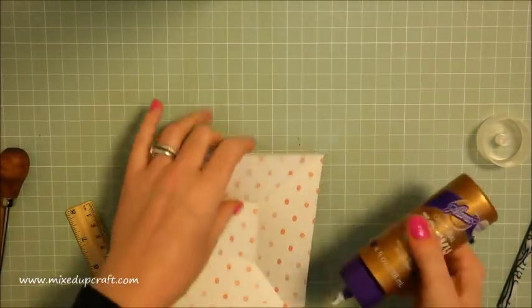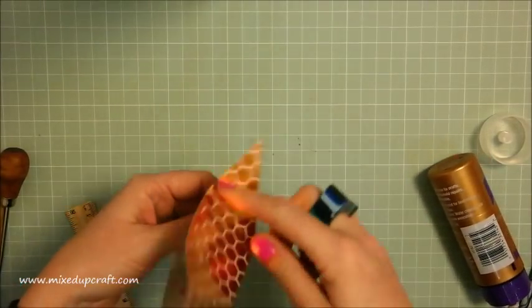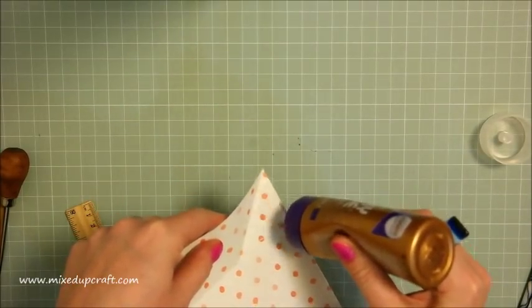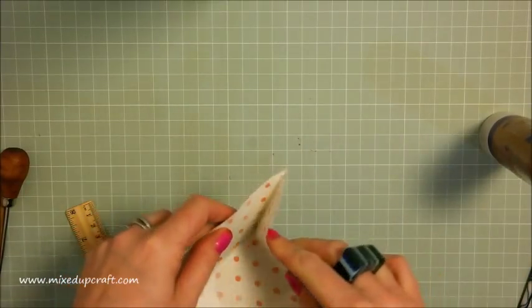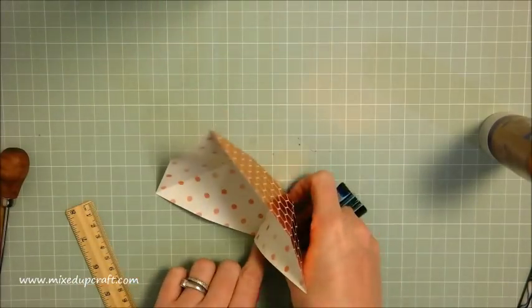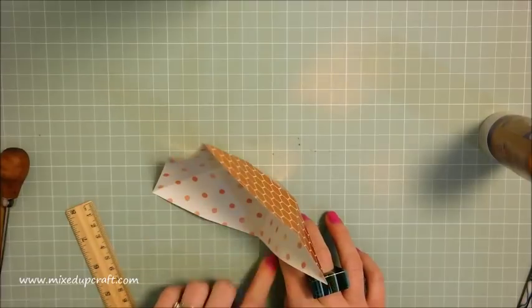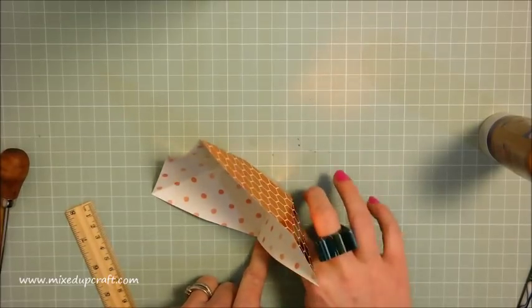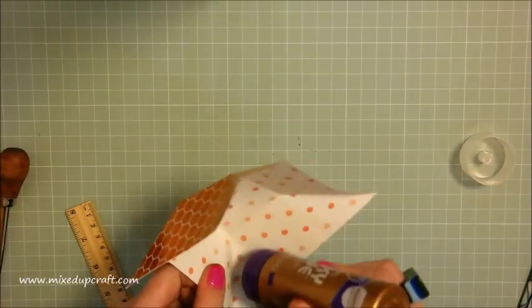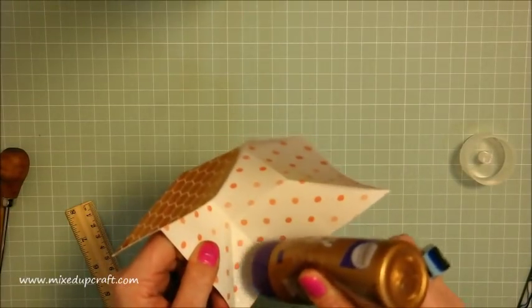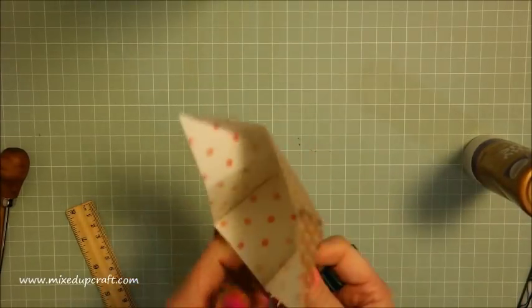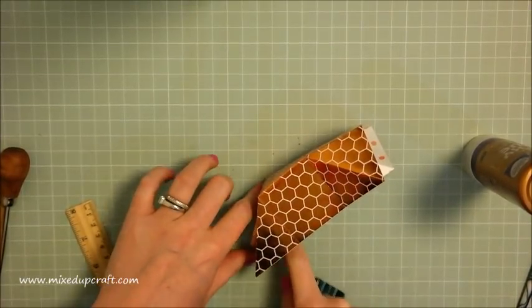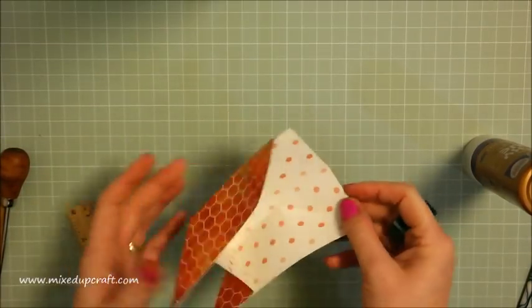Grab some glue and where you've got those two triangles, pop some wet glue inside one of them and stick it together. You can lie it down and make sure that all sticks nicely. Go around to the next one and apply some glue to one of the triangles and squash it down. Repeat that on the other two.